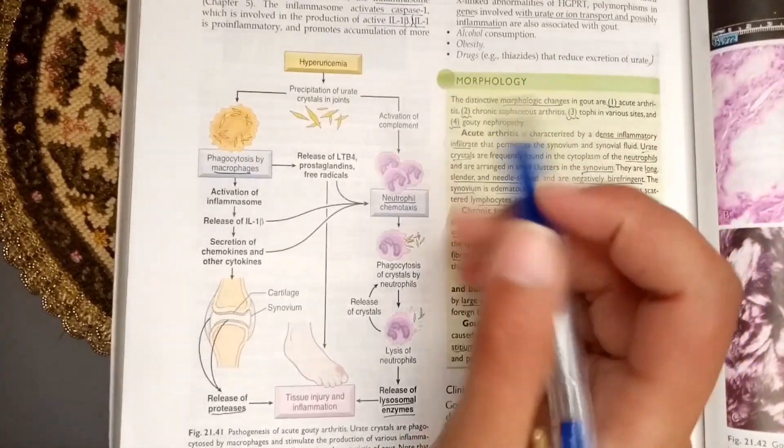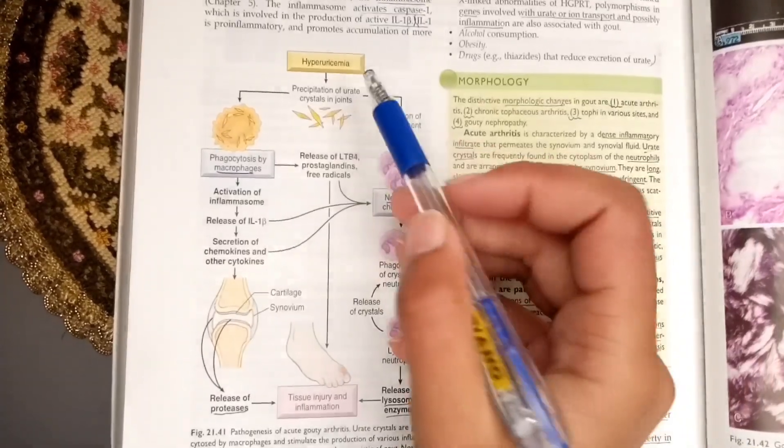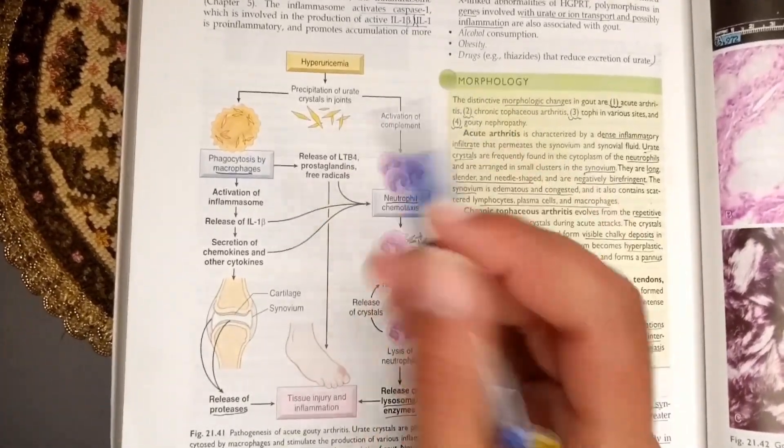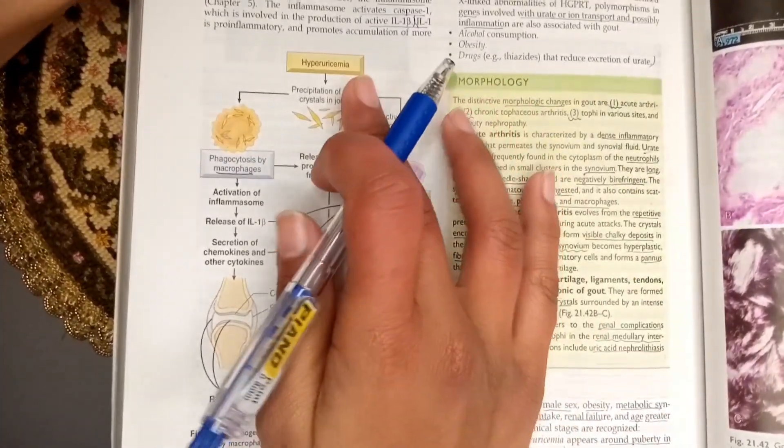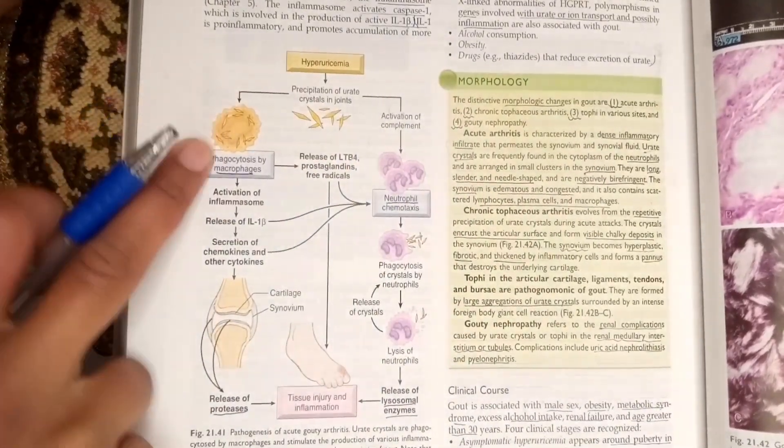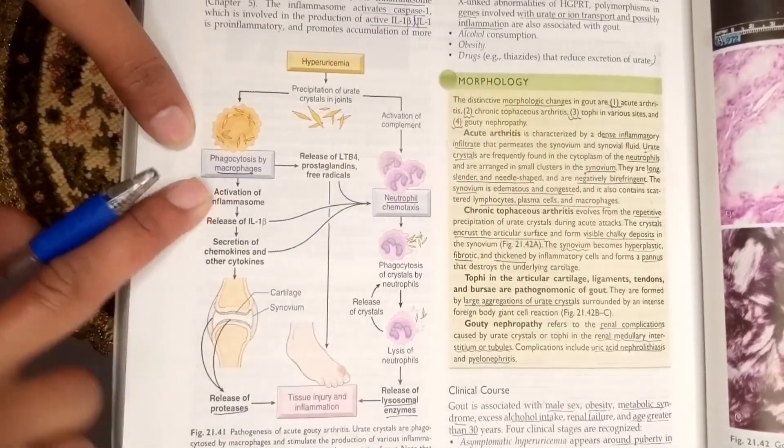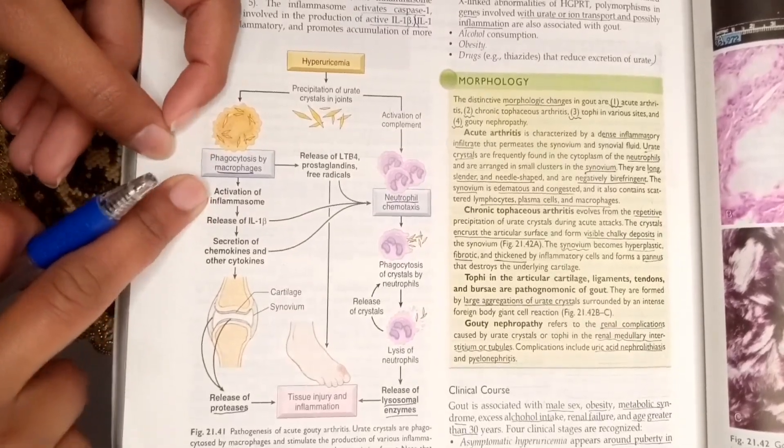First of all, we have hyperuricemia, which means high levels of uric acid in the blood. This causes precipitation of urate crystals in the joint. These urate crystals are then phagocytosed by macrophages.